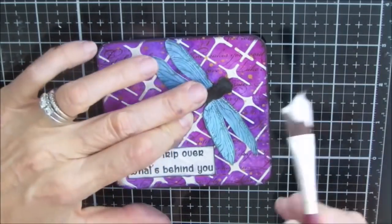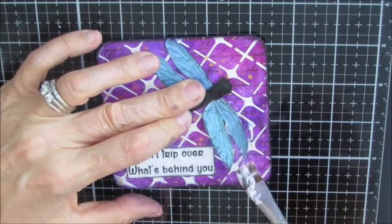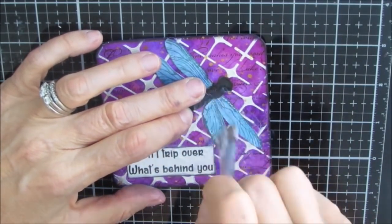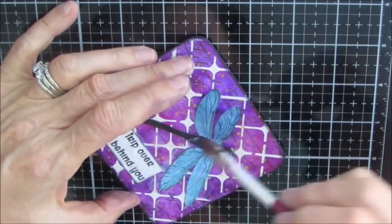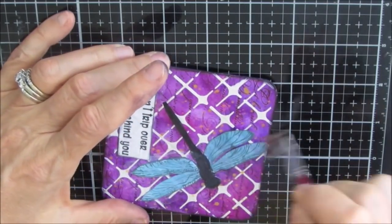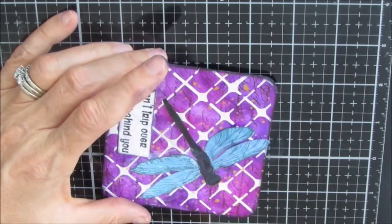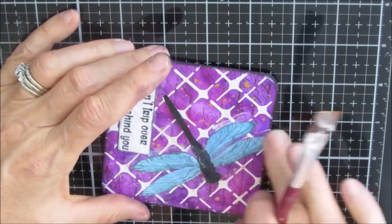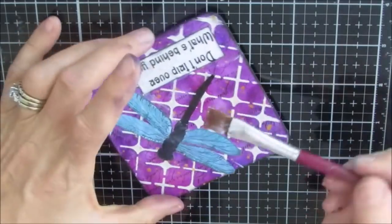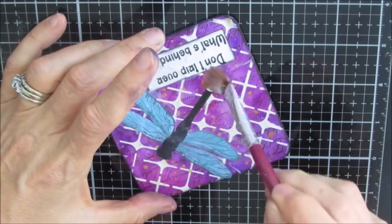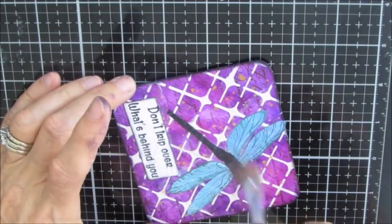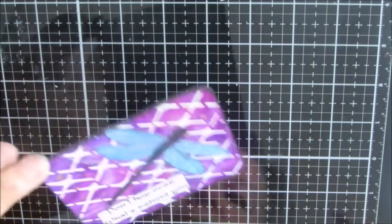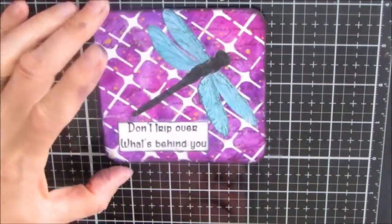And since this is a fridge magnet, not an art journal page, I was able to do more texture and I could have done it 3D. And I'm really pressing it down because I do have the modeling paste there. You want to make sure you have adherence to it.